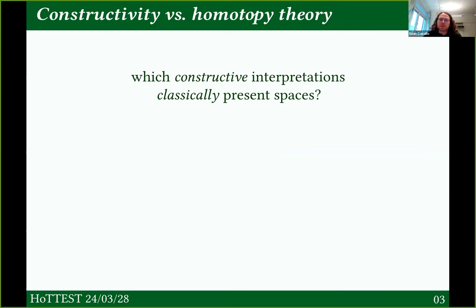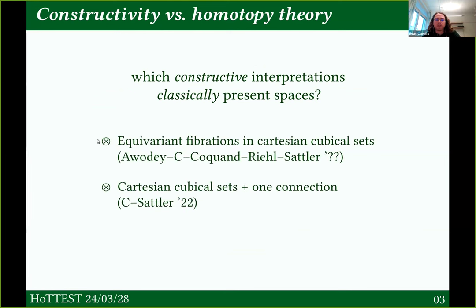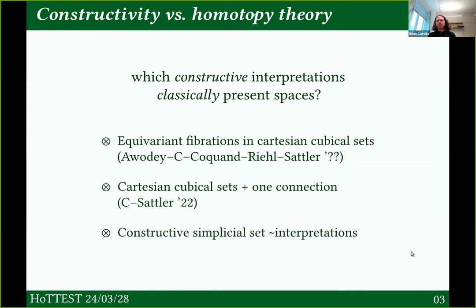Which constructive interpretations classically present spaces? We have some answers. There's the equivariant fibrations model in partitioned cubical sets — work of myself, Steve Awodey, Thierry Coquand, Emily Riehl, and Christian Sattler, which we've been writing up for a long time, but I can promise you we're actively writing it up these days. There's also, in Cartesian cubical sets with one connection on the cubes, a constructive interpretation that classically presents spaces — my work with Christian Sattler. And then we have the constructive simplicial set quasi-interpretation, which does classically present spaces.